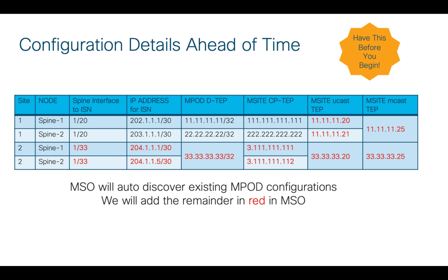When you configure MSO, it will automatically discover and import any existing multipod configurations for you, so it's really easy. Anything shown in black will be auto-discovered. The addresses shown in red are ones we'll need to add - we'll tell the multi-site orchestrator about these, and the MSO will then push the proper configs to all sites to complete everything.